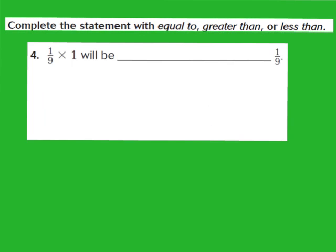Now let's take a look at question number 4. Complete the statement with equal to, greater than, or less than. For number 4, we have the fraction 1/9 times the whole number 1, and it says it will be blank compared to 1/9. The product of 1 and any fraction — in this case 1/9 — will be equal to that fraction, because of the identity property of multiplication.